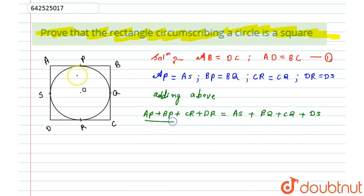If you look at this expression, AP plus BP is nothing but AB, so in place of this I can write AB. Similarly, CR plus DR is nothing but DC, so I can write DC. AS plus DS is nothing but AD, and BQ plus CQ is nothing but BC.